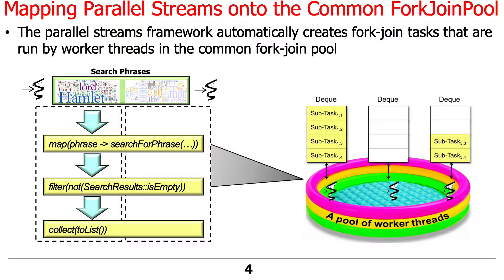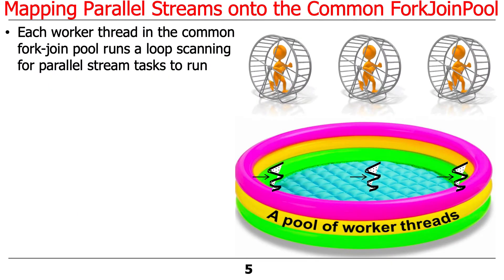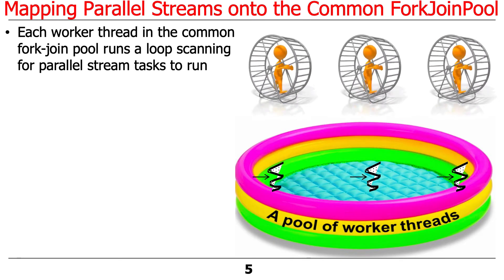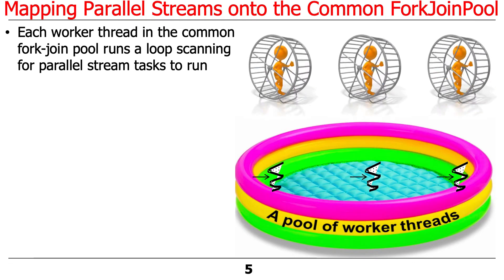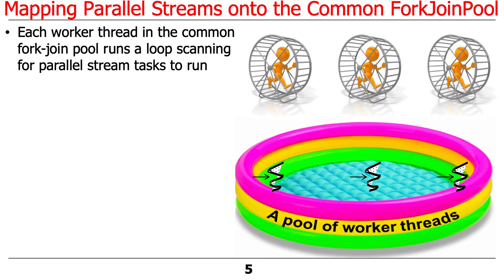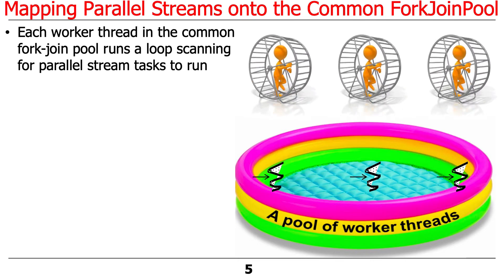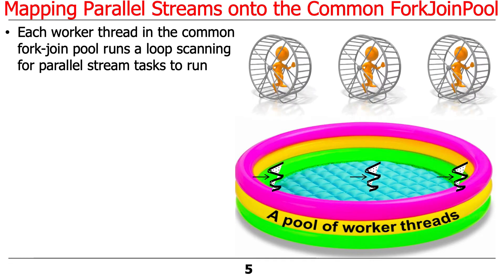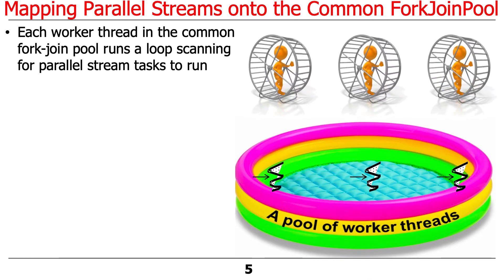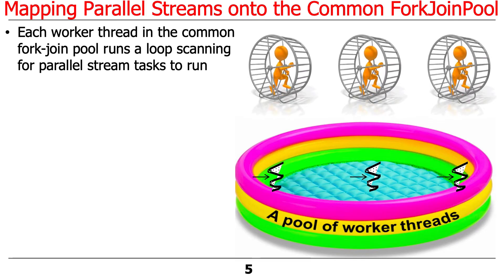It's the streams framework when you have a parallel stream, and it's going to end up creating these fork-join tasks that are going to be run by the worker threads in the common fork-join pool. What you've got is these worker threads running in the common fork-join pool, and they just sit there scanning for tasks to compute. You can think of them as — like I show here with my gerbil wheel — kind of running, looking for work to do, pulling stuff out of the pool, and processing stuff in the pool.